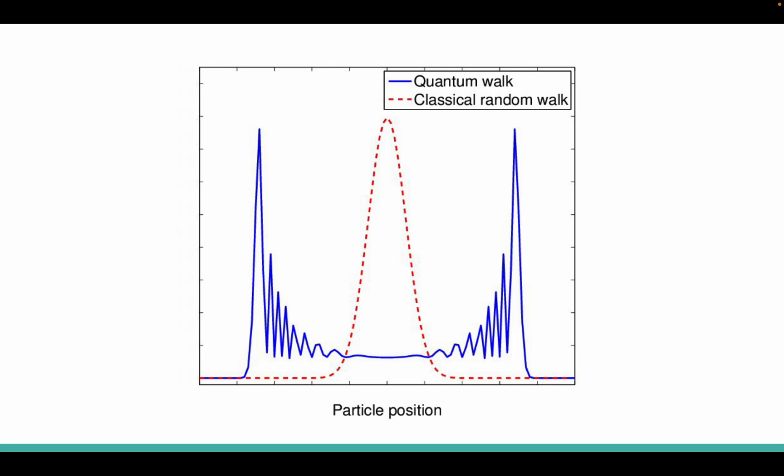This localization area allows us to find the target node much more efficiently than using a classical random walker. In fact, quantum walks have been shown in research that it can speed up search algorithms in complex networks exponentially compared to classic random walks.